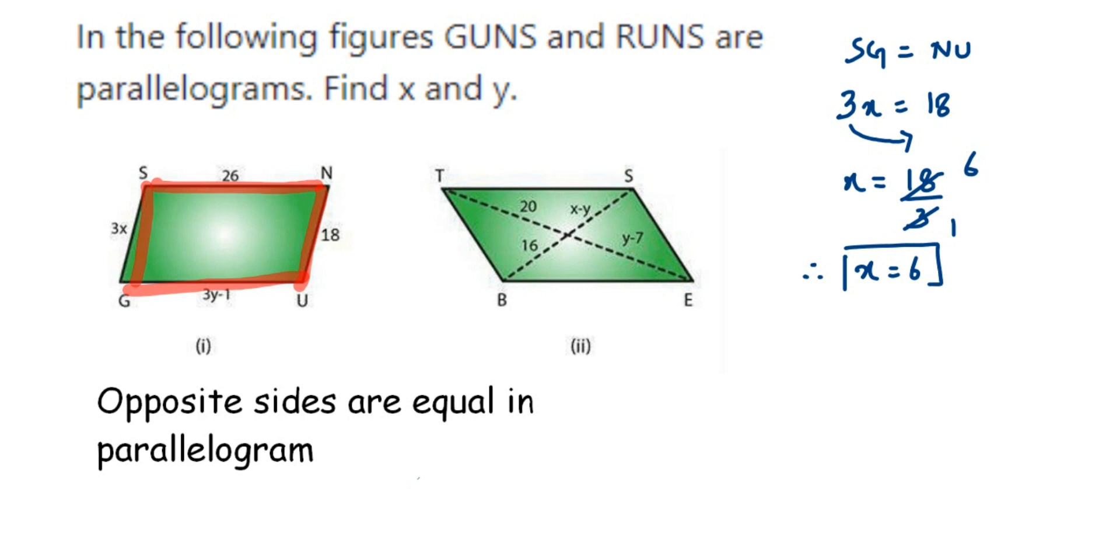Similarly, the other side: SN is equal to GU. SN is 26, so 26 is equal to GU, which is 3y minus 1. Transpose minus 1 to the other side, subtraction becomes addition. So 26 plus 1 is 27, equal to 3y. Transpose 3 to the other side, it comes in division. Y is equal to 27 upon 3, which is 9. Therefore we got y value as 9.